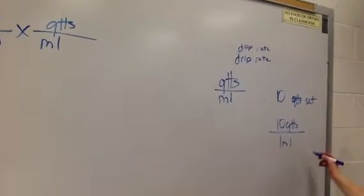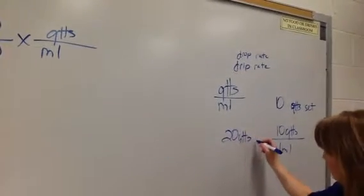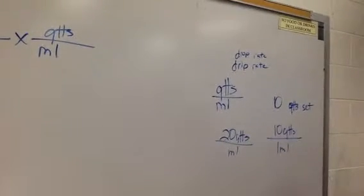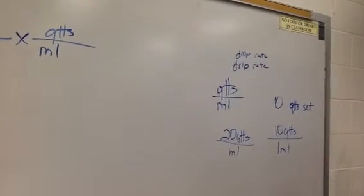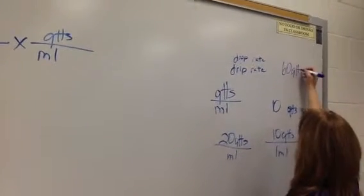If you have a 20 drop set, it'll be 20 drops per ml. If you have a mini drip set, what is that going to be? Or a micro drop set? 60. 60 drops per ml.